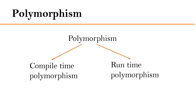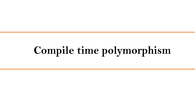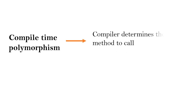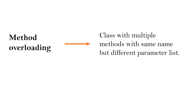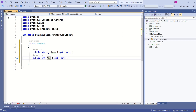There are two types of polymorphism: one is compile time polymorphism and the other one is runtime polymorphism. In case of compile time polymorphism, the compiler determines the method to call based on method signature and arguments passed, and we can achieve it through method overloading. Method overloading allows a class to have multiple methods with the same name but different parameter list.